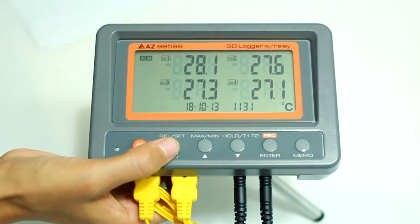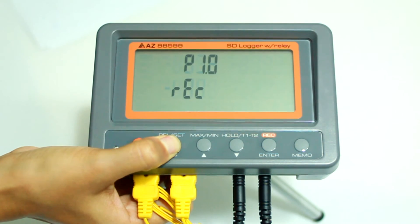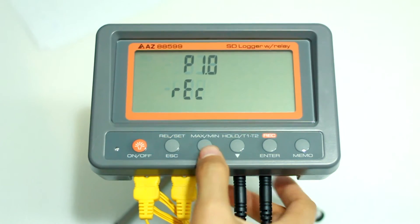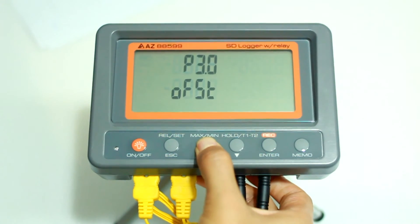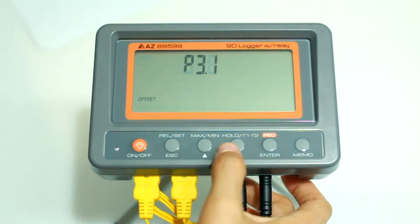Press the set key for more than 2 seconds to enter setup mode. Press the down key to find P3.0 offset and press enter key to enter. First, choose which channel you want to offset.